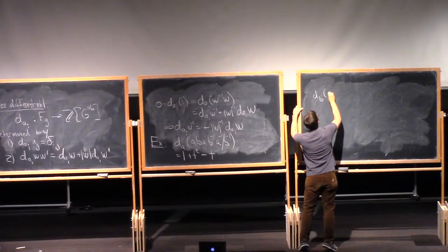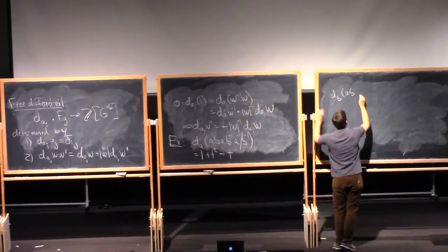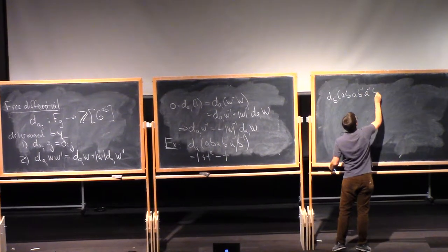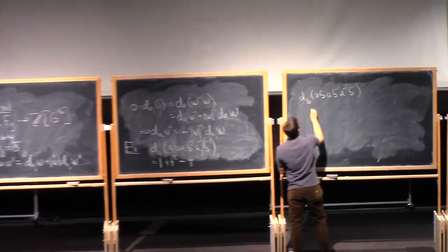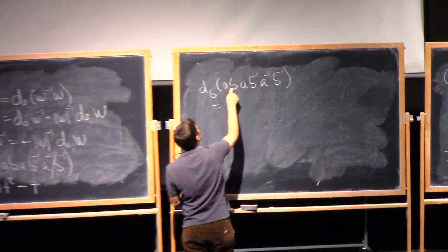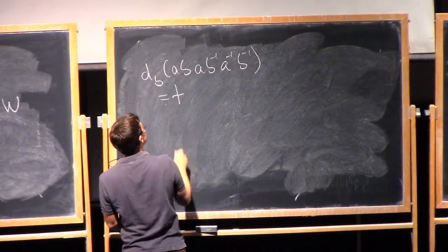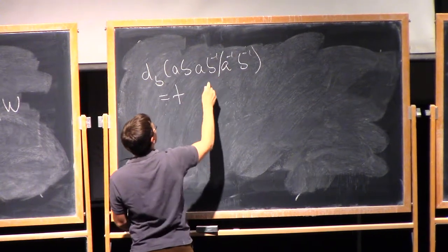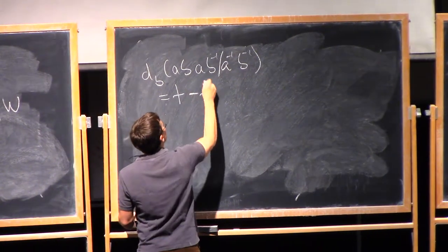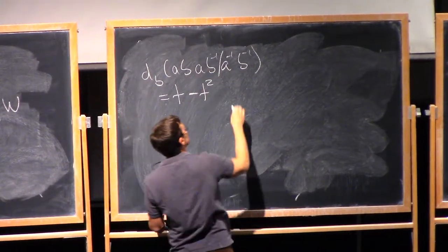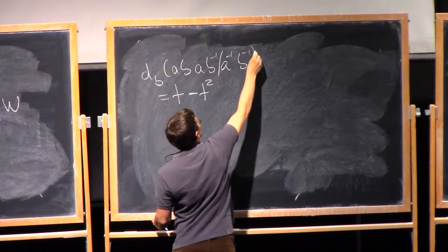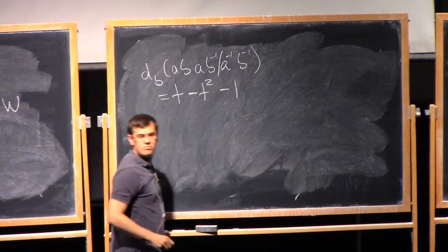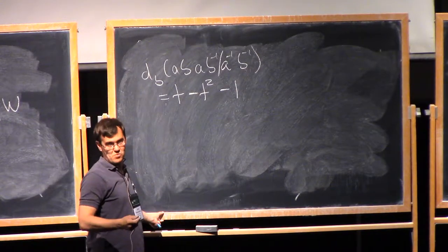So, dB of ABA B⁻¹A⁻¹B⁻¹ — I abelianize what comes before B. That's this A, which gives me a T. Here I have a B inverse, so I abelianize everything up through here; that's minus T squared — minus because that's an inverse. Here I abelianize everything up to here, but this is the whole word, which is 1 in the group, so this is minus 1. It really does work.